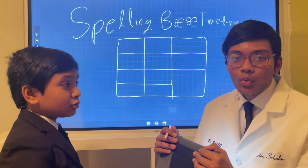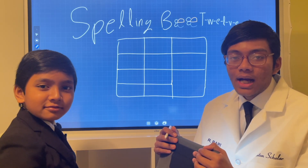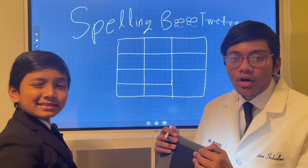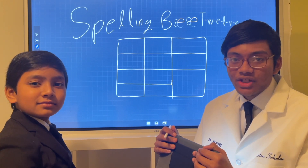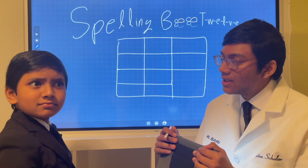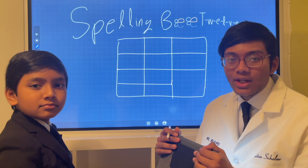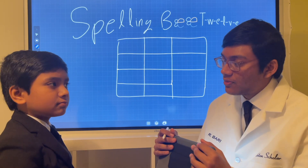Welcome to Spelling Bee Round 1. I'm Rifat Bari, Perfect ACT Scorer, Artificial Intelligence Researcher, and Perfect GPA. Today you have your contestant, Professor Suborna Isaac Berry, World's Youngest Mayor and Youngest Professor.